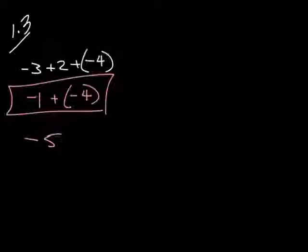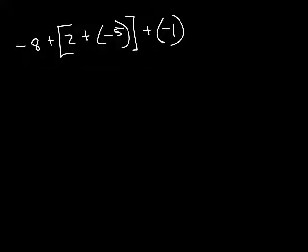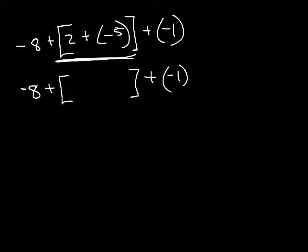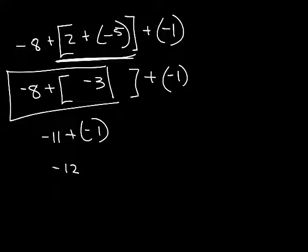Example 11 is a bit trickier because it's bigger: negative 8 plus 2 plus negative 5 plus negative 1. Remember PEMDAS — do what's in the parentheses first. So we do 2 plus negative 5: signs are different, take the difference, put the sign of the largest number on it, giving negative 3. Then combine from left to right: negative 8 plus negative 3 — signs are the same, add to get negative 11. Finally, negative 11 plus negative 1 — signs are the same, add to get negative 12.